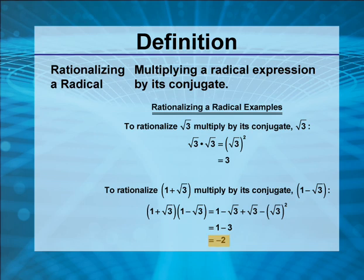As you can see, the original expression 1 plus the square root of 3 has been turned into a rational number by multiplying by its conjugate.